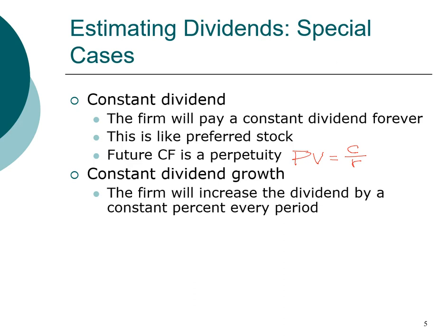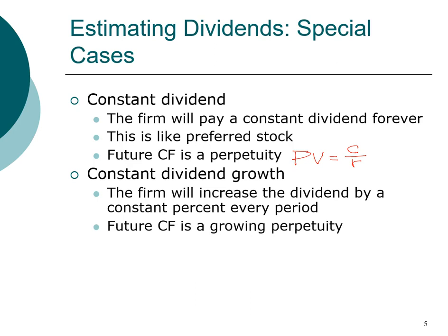The company is going to pay a dividend, and we assume that dividend will increase each year — which is what we expect a growing company to do. The assumption we make here is that the rate of growth for the dividend is constant. So if the company pays a dollar in dividend today and increases it by five percent, then next year it will be a dollar five cents, and it keeps growing at five percent per year. That type of cash flow is called a growing perpetuity.